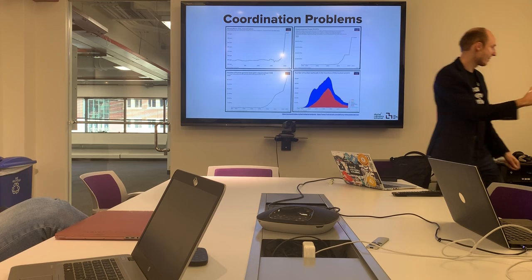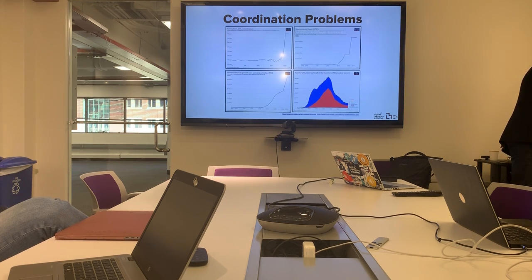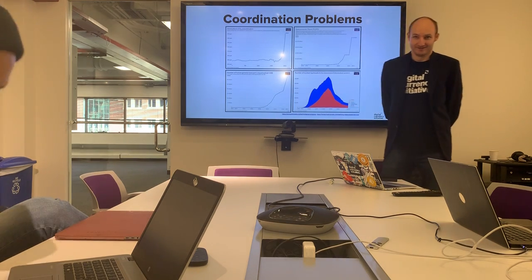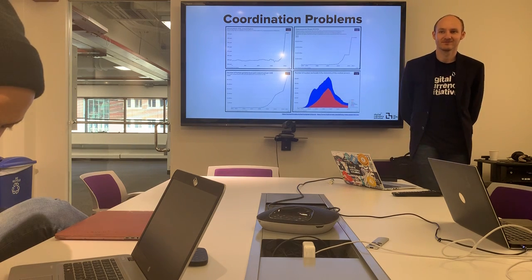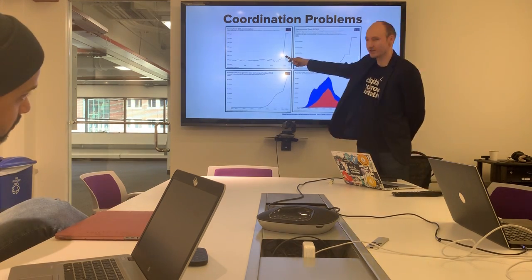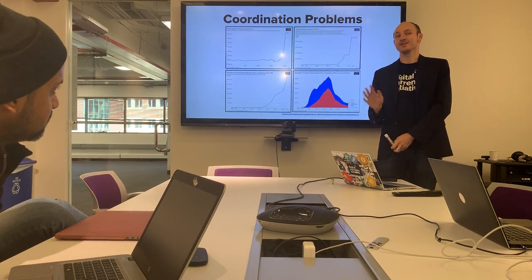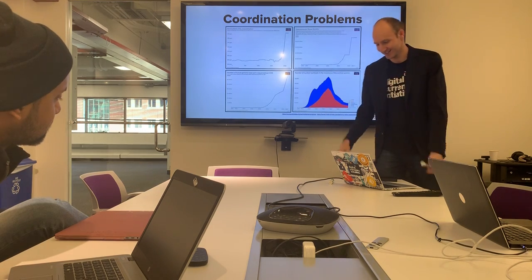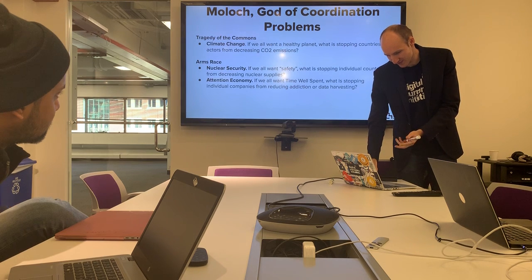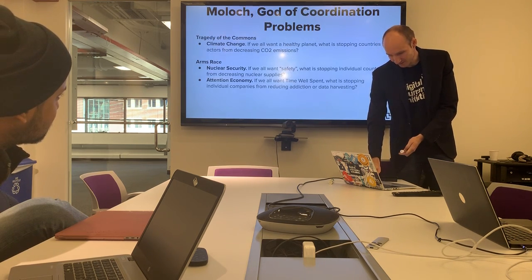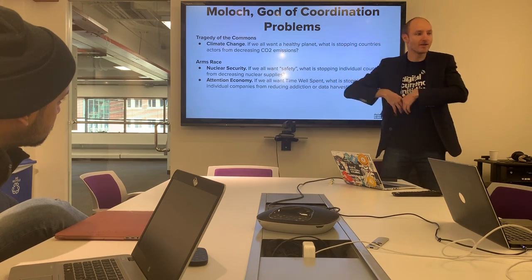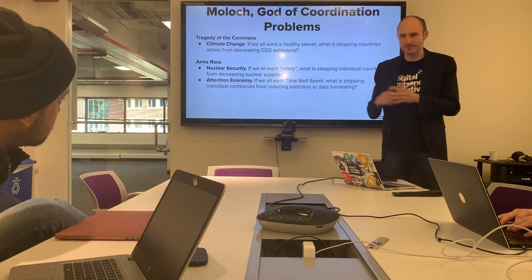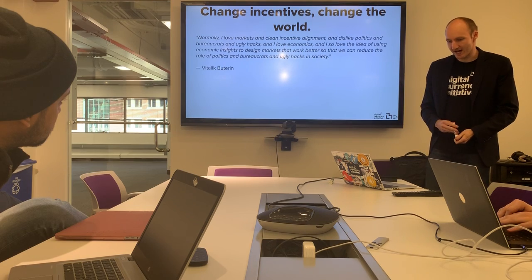There's also the historical unfairness angle — developed countries have already polluted so much, and it seems unfair to tell developing countries they can't do what we did. We live our great lives with AC, and say 'you need to keep the amount of cars you use down.' Using the coordination problem and incentive perspective is very powerful. If these are results of bad game theory — individual agents acting in a way that leads to a multipolar trap — then what you can start to do is change the incentives.